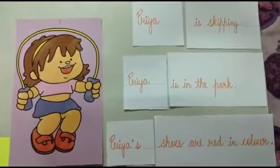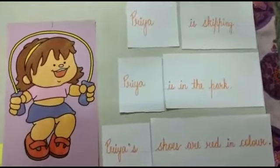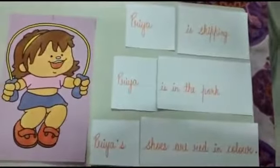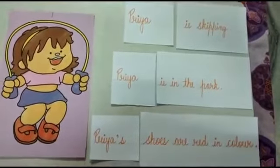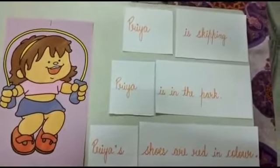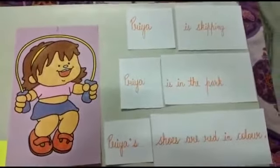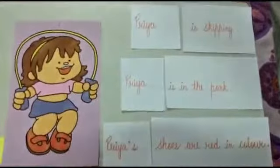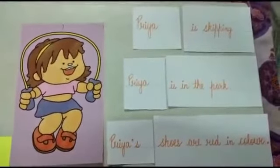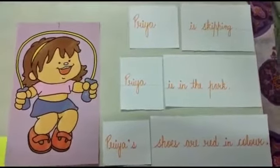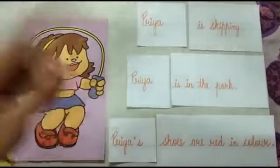Children, now we are going to talk about Priya. Look at Priya — she is looking so happy. Let's read the sentences: Priya is skipping. Priya is in the park. Priya's shoes are red in color. Now children, here again if you see, we are repeating the word Priya again and again, and all three sentences are talking about the same girl who is Priya. So we can replace the naming words with the pronoun.